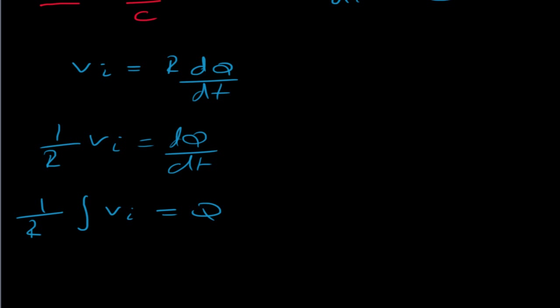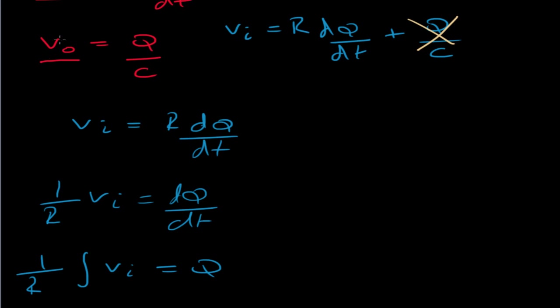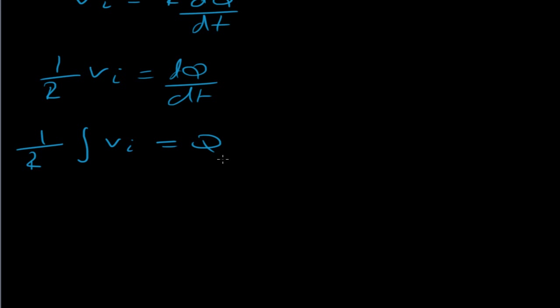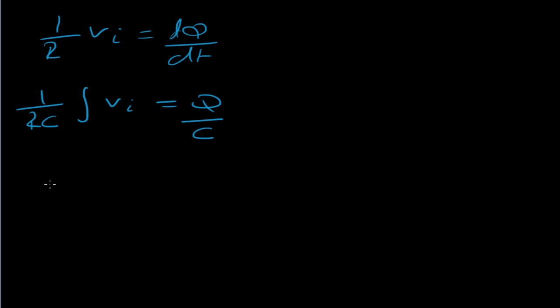And then, now I know that Q is related by this expression here, but it involves a C. So, let's divide both sides by C. So, now I've got Q over C, and I know Q over C is V0. So, finally, I can write then V0 equals 1 over RC, which is the time constant, times the integral of the input voltage. And there's the result.